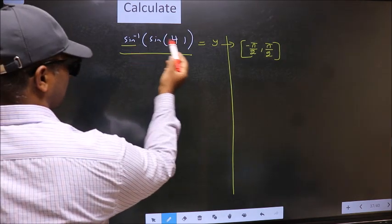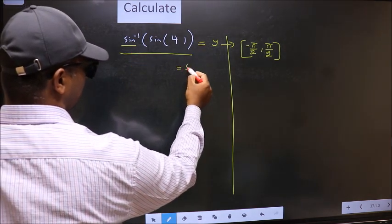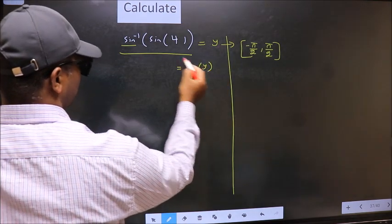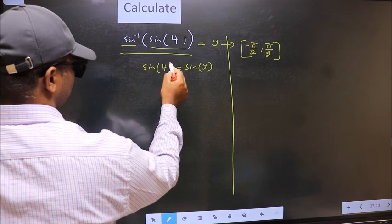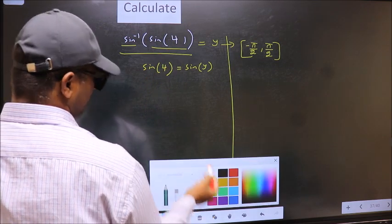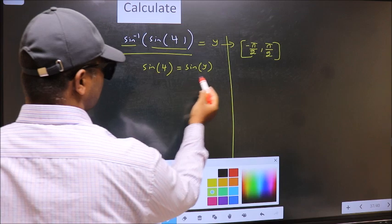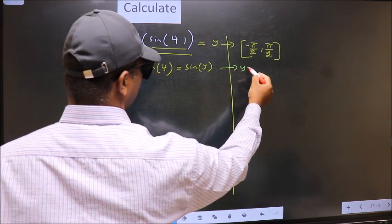Shift sin inverse to the other side. It will become sin y, and this no change. Now comparing both sides, we get y to be 4.